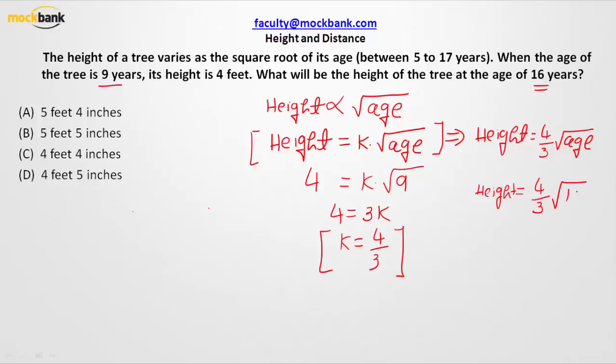So let us find out what's the height when the age is 16 years. This becomes 4 over 3 times 16. 4 will come out of it, and the height that we have got is 16 over 3.